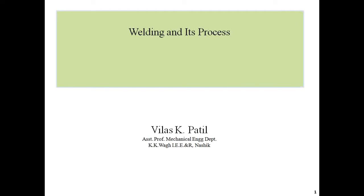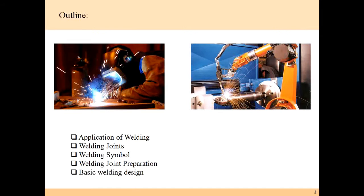Dear students, welcome to this session. Today we are going to cover welding and its processes for defect applications. The welding joint is a permanent joint, and welding is basically classified in two ways: manual welding and robotic/machine welding.